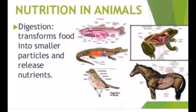Holozoic nutrition is a type of nutrition where organisms take in complex organic food materials into the body by the process of ingestion. The ingested food is digested, the molecules are absorbed, then broken down in respiration to give energy. All mammals and many other organisms have holozoic nutrition.